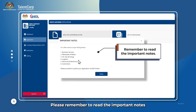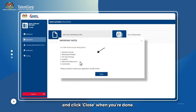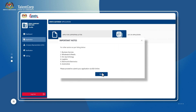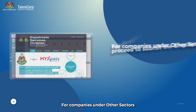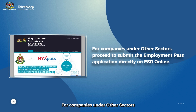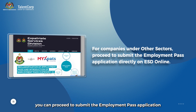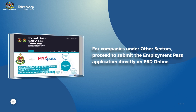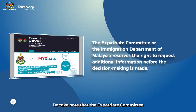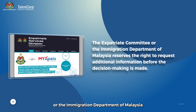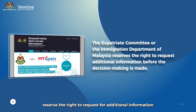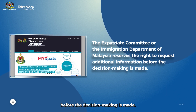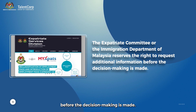Please remember to read the important notes and click Close when you're done. For companies under Other Sectors, you can proceed to submit the Employment Pass application directly on ESD online. Do take note that the Expatriate Committee or the Immigration Department of Malaysia reserves the right to request for additional information before the decision-making is made.